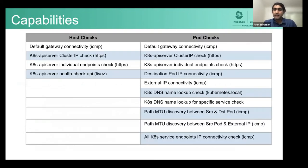What can it do today? It works with IPv6, IPv4 stacks. There are a bunch of checks that it runs. On the host side, when it's running on the host network namespace, it runs connectivity check for the gateway, API server. If there are multiple API servers in a highly available cluster, it checks all of them.